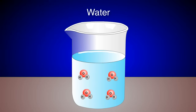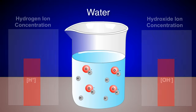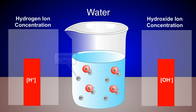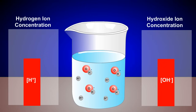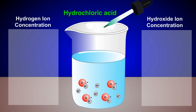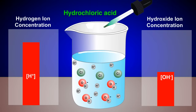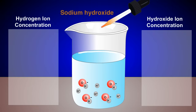When water dissociates, it breaks apart into an equal number of hydrogen ions and hydroxide ions. In contrast, when other substances dissociate, they may release more hydrogen ions or more hydroxide ions. For example, hydrochloric acid releases more hydrogen ions as it dissociates. And sodium hydroxide releases more hydroxide ions.